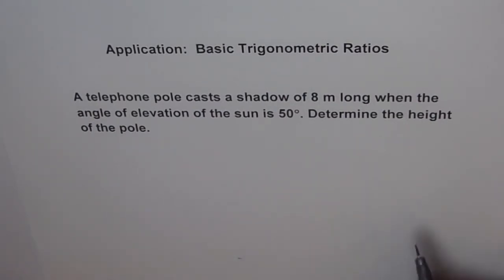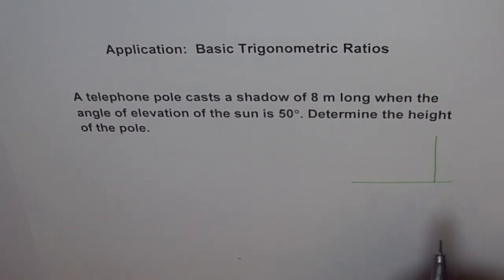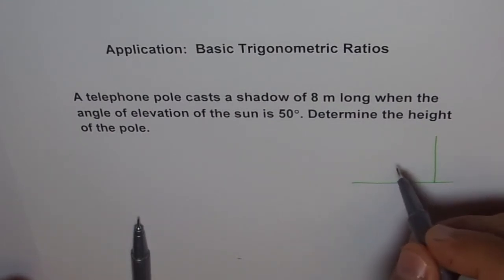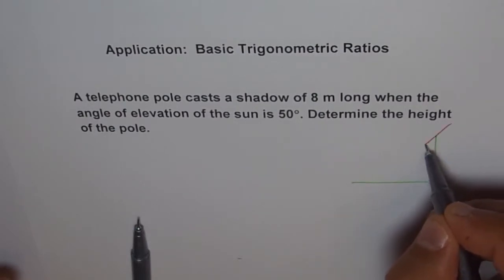Let's try to sketch it first. This is our pole. Now the shadow is being cast and the angle of elevation is 50 degrees. Angle of elevation is taken from the horizontal always. This is our pole and this is our shadow.